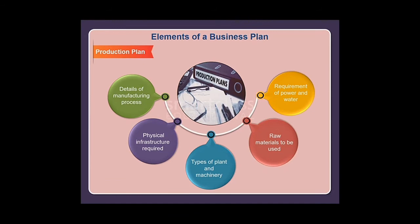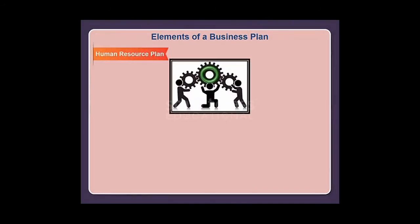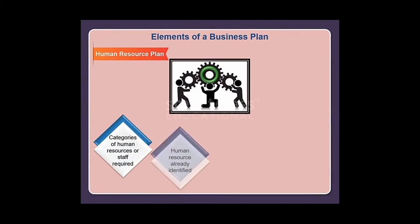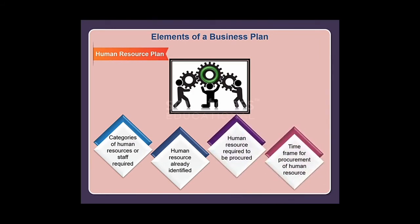The human resource plan covers categories of human resources or staff required, human resources already identified, human resources required to be procured, and the timeframe for procurement of human resources.